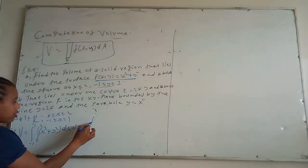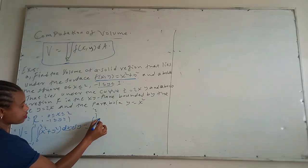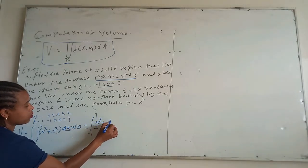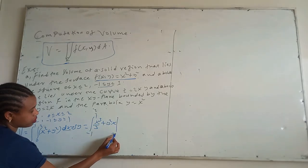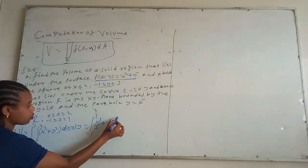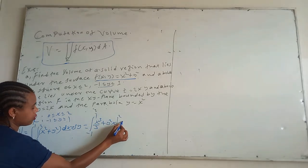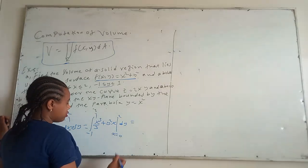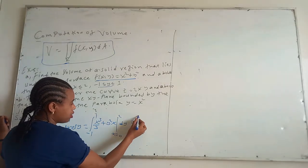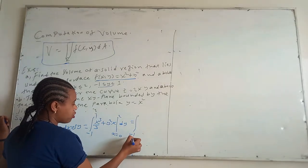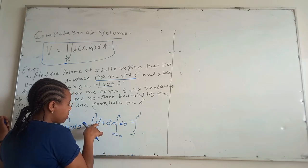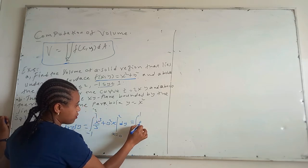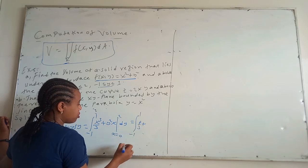Integrating with respect to x gives x cubed over 3 plus y squared times x, evaluated from x = 0 to x = 2, dy. Substituting x = 2 gives 8 over 3 plus 2y squared, and substituting x = 0 gives zero.